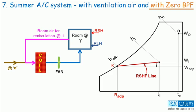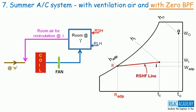However, the percentage of ventilation air and recirculation air might change with different applications. Therefore, we have in this case the mixture of ventilation air and recirculation air at state point 1 entering into the coil.